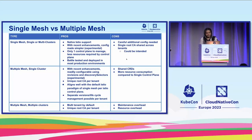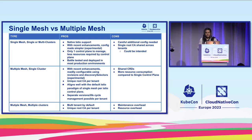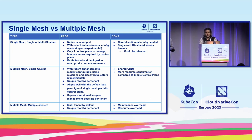For the multiple mesh, single cluster part: with all these recent enhancements, it's readily configurable using the revisions feature and the discovery selectors. So you get a unique root CA per tenant, you have identity isolation, and it aligns well with the default Istio model of a single mesh per Istio control plane. Things are easy to envision, and when you are doing the deployment you will not make mistakes — unlike the first case where careful additional configuration was needed to ensure nothing is leaked across namespaces.